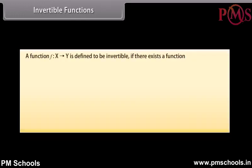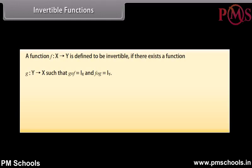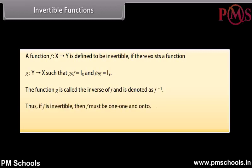Invertible functions: A function f from X to Y is defined to be invertible if there exists a function g from Y to X such that g∘f = I_X and f∘g = I_Y. The function g is called the inverse of f. Thus, if f is invertible, then f must be one-one and onto. Conversely, if f is one-one and onto, then f must be invertible.